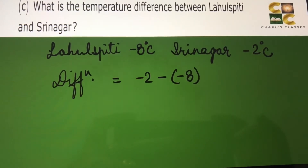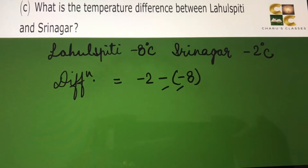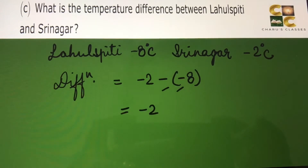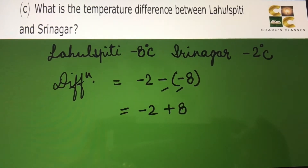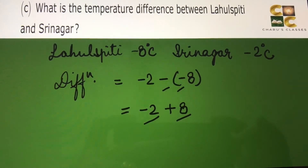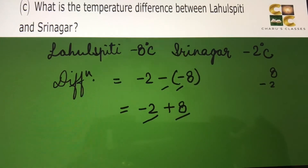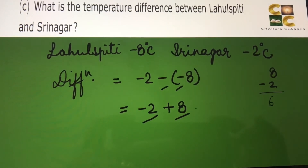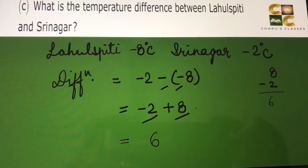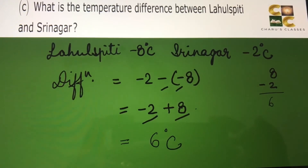As explained before, when there is a minus inside the bracket and a minus outside, the minus minus becomes positive. So this becomes minus 2 plus 8. When one number is positive and the other is negative, we always subtract: 8 minus 2 equals 6, and the sign of the bigger number applies. Since 8 is bigger, the difference is 6 degrees Celsius.